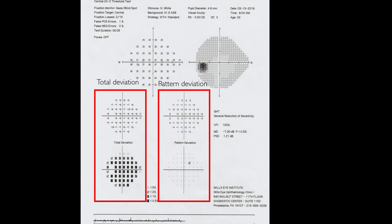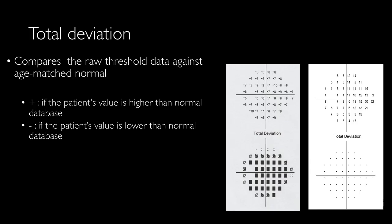When we have a dark box, the p-value is less than 0.5 percent. It means this point threshold value is seen in less than 99.5 percent of the people at this age.